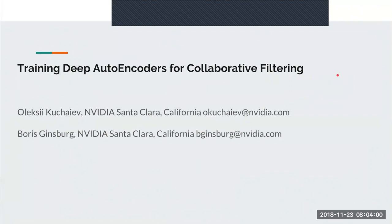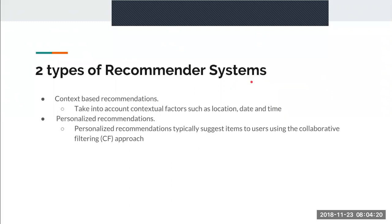Today's topic is training deep autoencoders for collaborative filtering, a paper from NVIDIA. Collaborative filtering is one of the approaches for recommender systems. There are two types: context-based recommendations, where the system takes into account factors such as location, date, and time; and personalized recommendations, where based on your taste and preferences you are recommended an item like a movie or a product from Amazon.